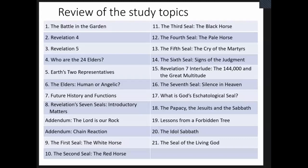The first addendum is called 'The Lord is My Rock,' and this concerns what happened on the day of Pentecost. As we study Revelation chapters four and five, we see a description of Jesus Christ arriving in heaven to begin his intercessory ministry on the day of Pentecost. The second addendum is called 'Chain Reaction,' and that one deals with the persecutions that started right after the day of Pentecost and continued through the period of the Roman Empire.